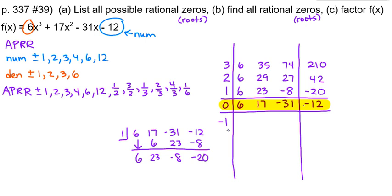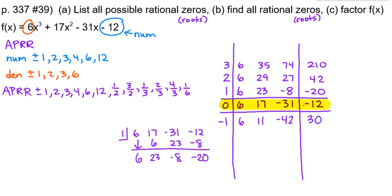Let's do negative 1. Bring down the 6. Six times negative 1 plus 17 gives 11. Eleven times negative 1 plus the next number in the zero row gives negative 42. Negative 42 times negative 1 plus the next number in the zero row gives 30. Still no roots, but let's keep trying. Let's do negative 2.